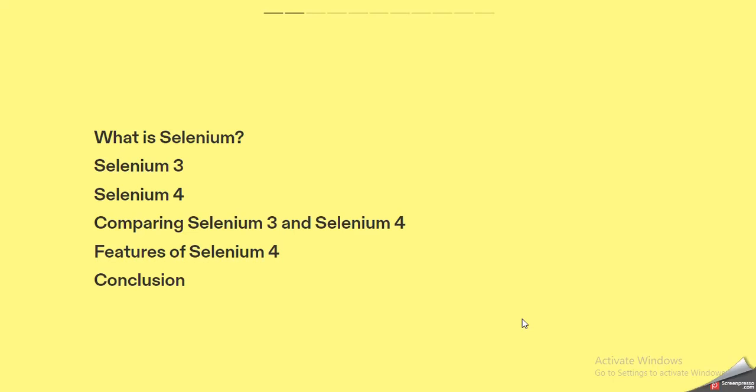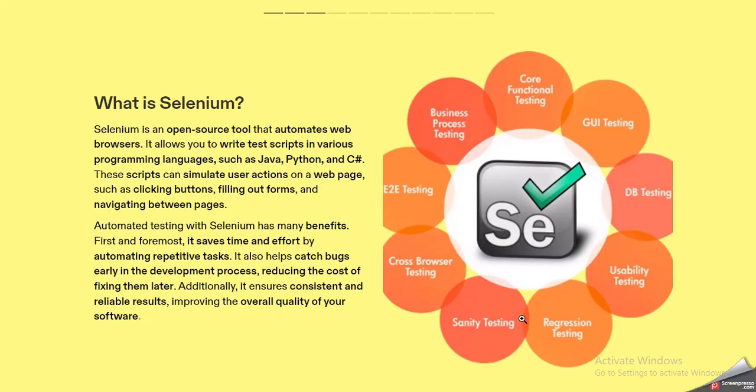Let's first look at what is Selenium. Before answering questions about version 3 or version 4 or the difference between them, you can start by saying that Selenium is an open source tool that automates web browsers. It allows us to write test scripts in various programming languages such as Java, Python, C#, and many more. These scripts can simulate user actions on a web page like clicking buttons, filling out forms, and navigating between pages.